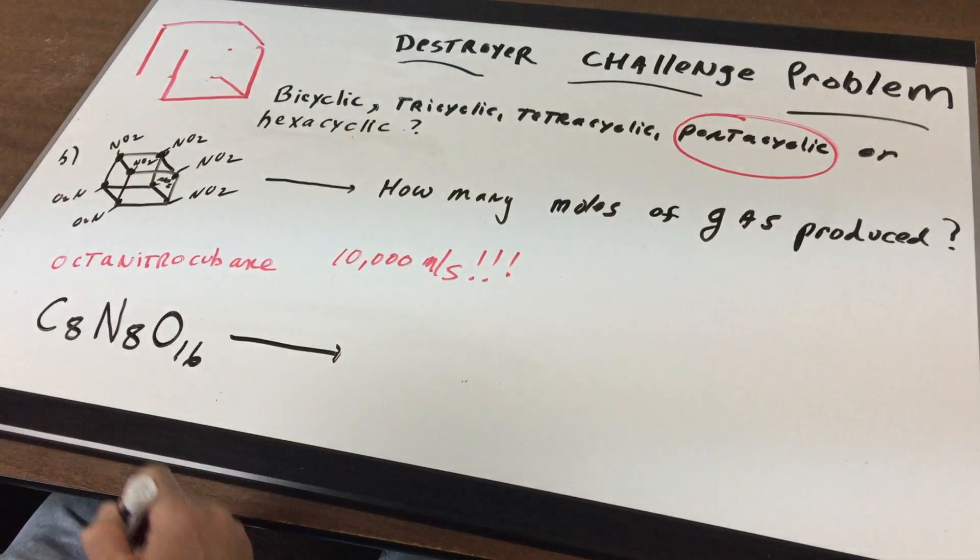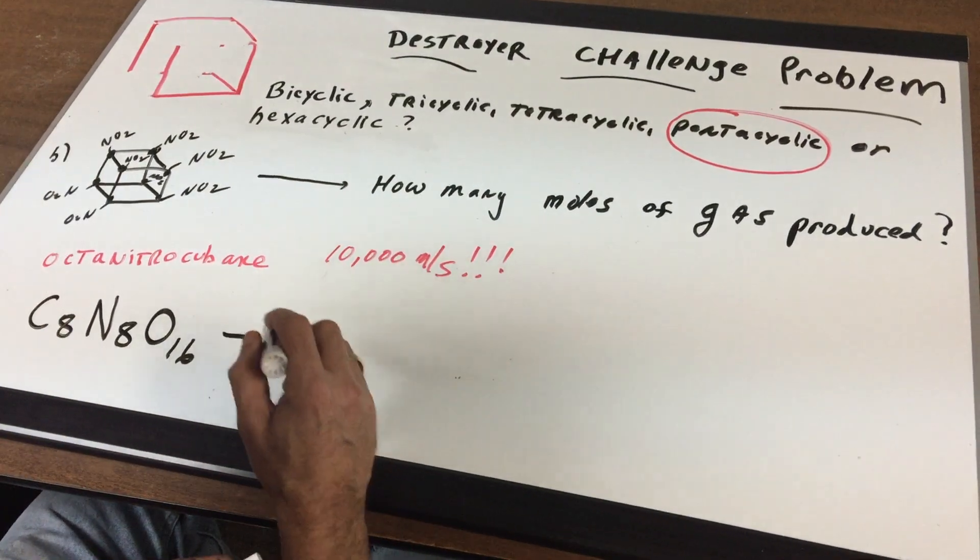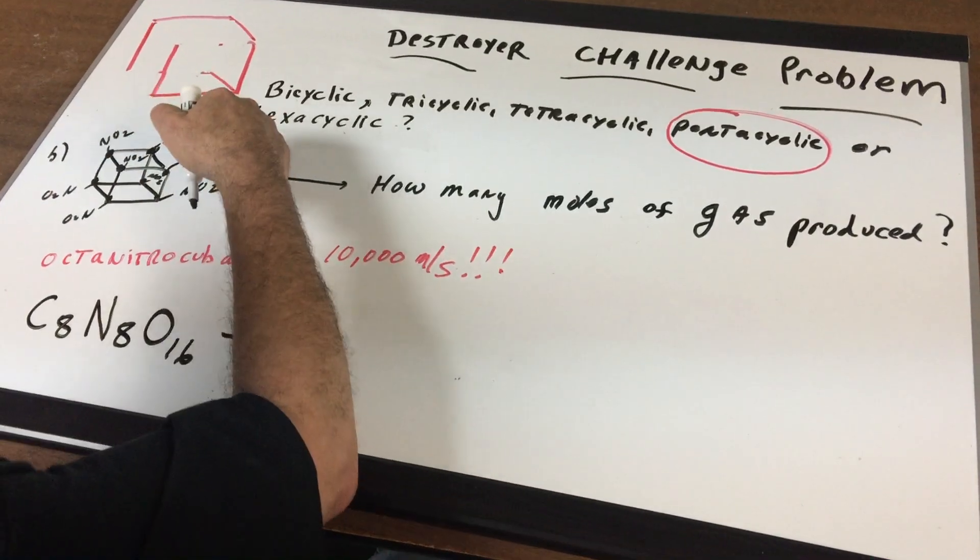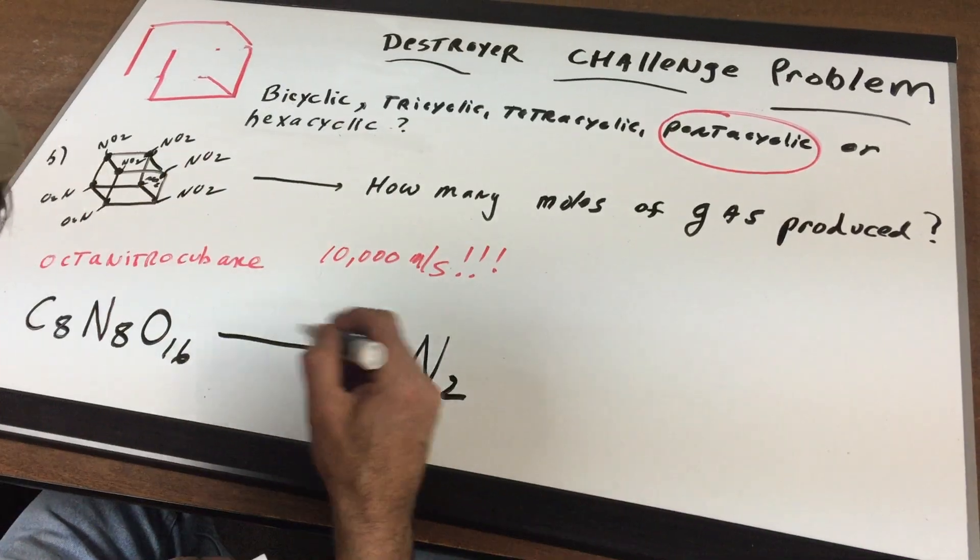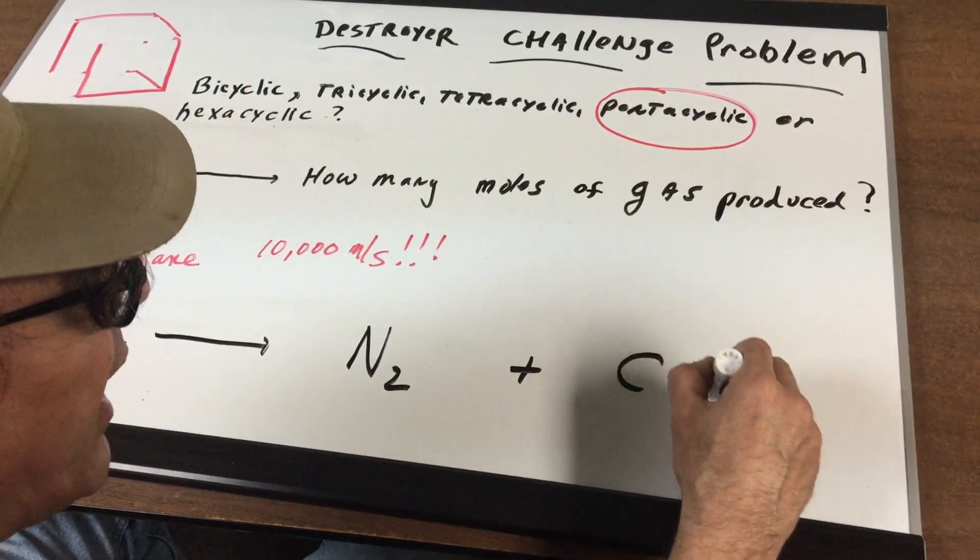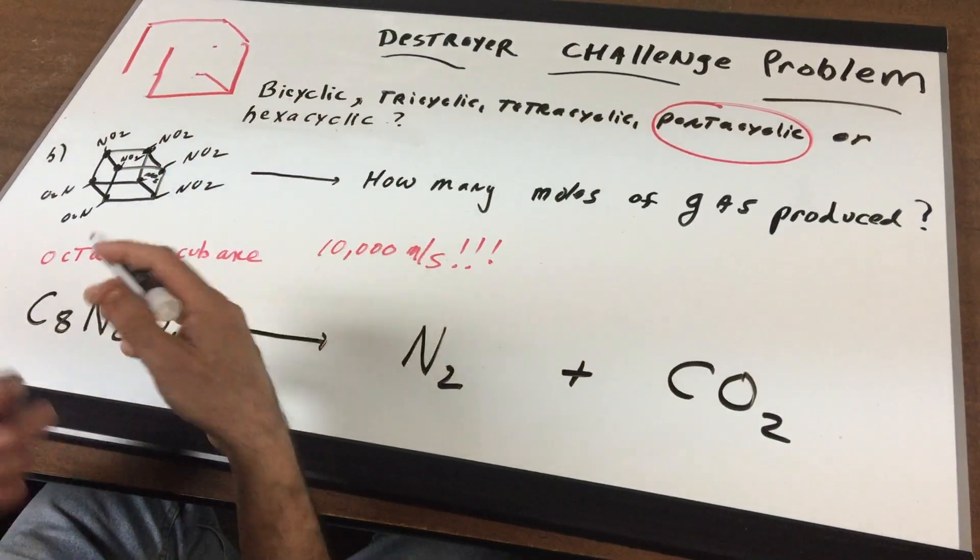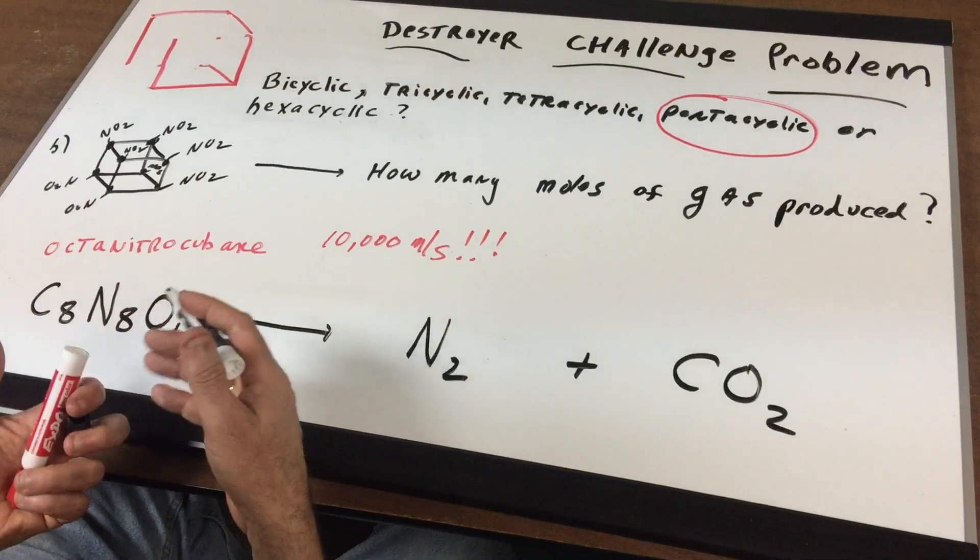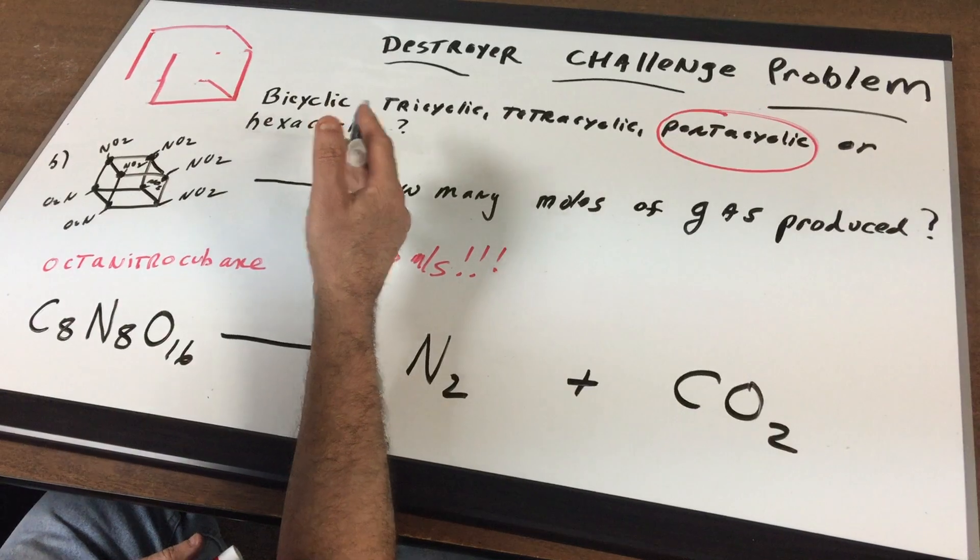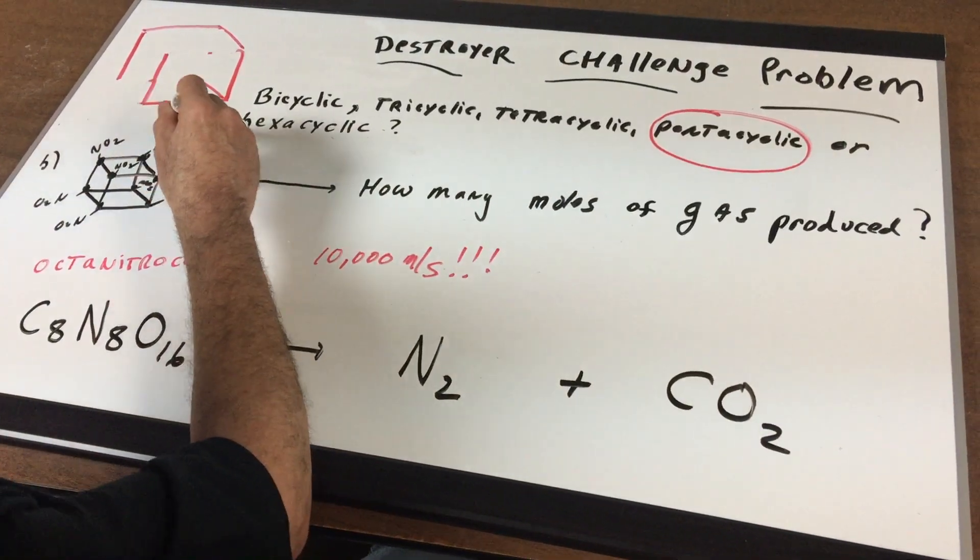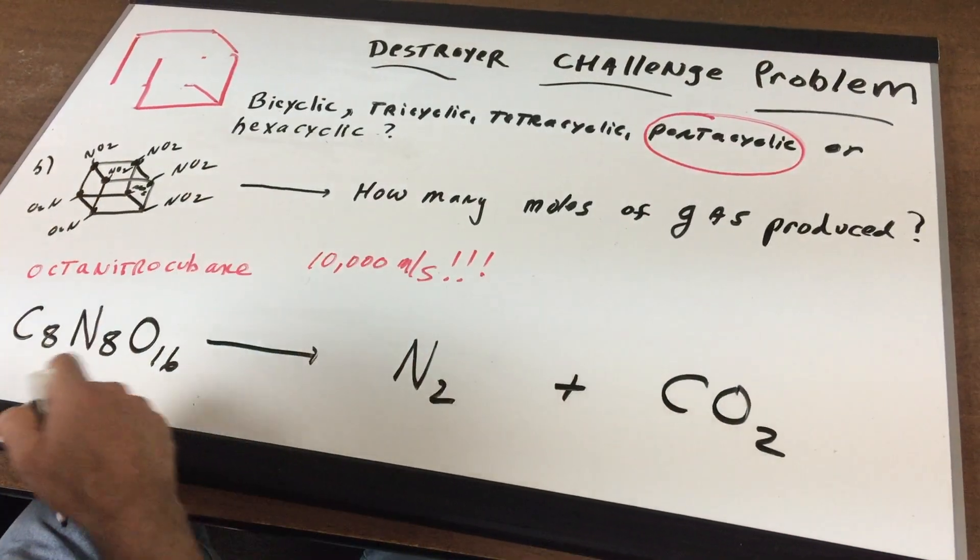So what we're going to do is we are going to detonate this. Now the two gases produced, if we use our heads, we have nitrogen gas to be produced. That's a very stable gas, nitrogen gas, and CO2 gas can be produced from this, because the carbons have to go to something. If we compromise and we let the nitrogen gas leave and the carbons can combine with the oxygens, we will get the two gases.